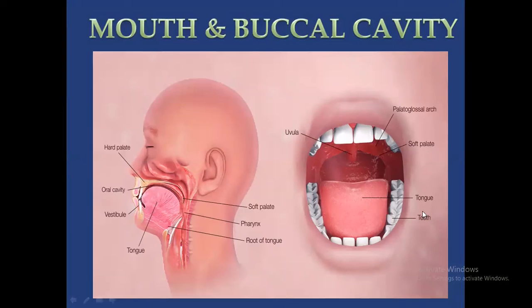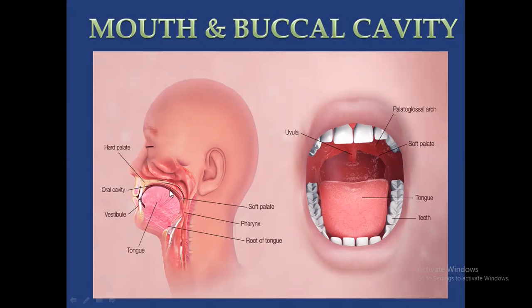Inside the mouth you can see the palate region. The palate means the above surface region — the upper surface of the mouth. The anterior palate is called hard palate and the posterior palate is called soft palate. So the palate consists of two regions: hard palate and soft palate — two things to remember.